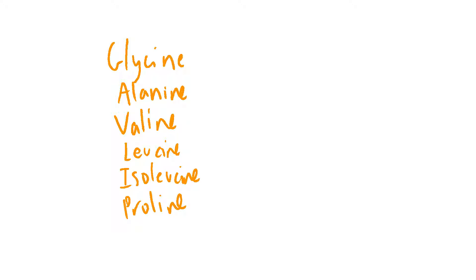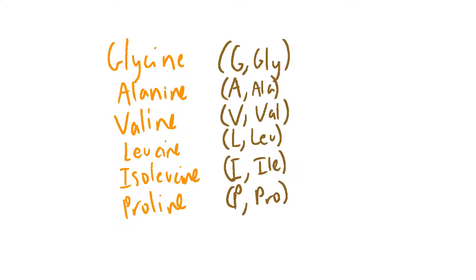All six of the GAVLIP amino acids have straightforward abbreviations. All of the single letter abbreviations are simply the first letter, and all of the three letter abbreviations are the first three letters, except for isoleucine, which is ILE instead of ISO. ISO sounds too cool, so they just had to change it.